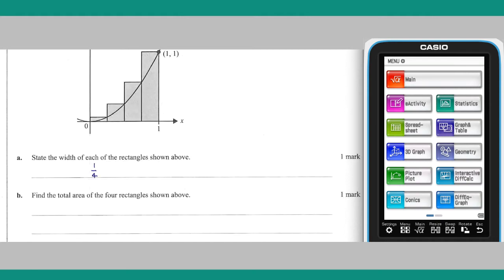Part B: the total area of these four rectangles is the product of their width by their heights as determined by the function y equals x squared. This can be most efficiently calculated by a ClassPad as follows.